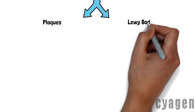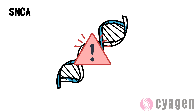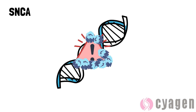However, alpha-synuclein can also form plaques or Lewy bodies due to abnormal self-aggregation in the brain environment, affecting the normal function of neurons and brain tissues. The defect of this gene is closely related to the pathogenesis of Parkinson's disease.